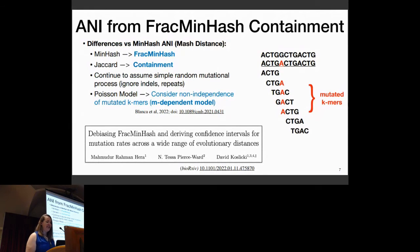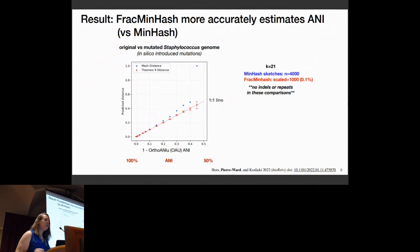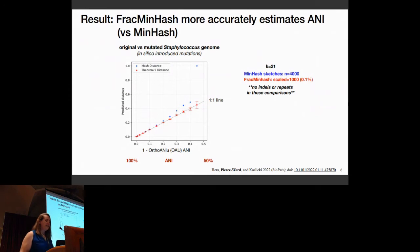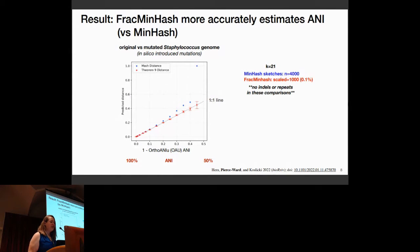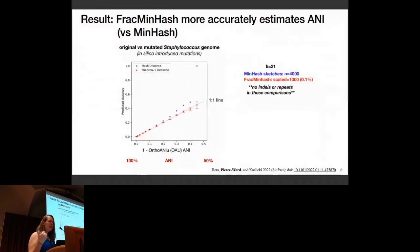A lot of that work was done by my collaborators Mahmoud Ramanhara and David Kozlicki. If we take a single Staphylococcus genome and in silico introduce mutations so we know the exact distance between these genomes — here I'm using ortho ANI as the gold standard alignment method, which is very similar to ANI-B — you can see the fragment hash sketch at a scale of 1,000 (which is also 0.1% of all K-mers) does pretty well even out to ANI ranges we don't typically look at, almost out to 50% ANI. The MASH sketches do quite well in the lower ranges but are less reliable at wider evolutionary distances.